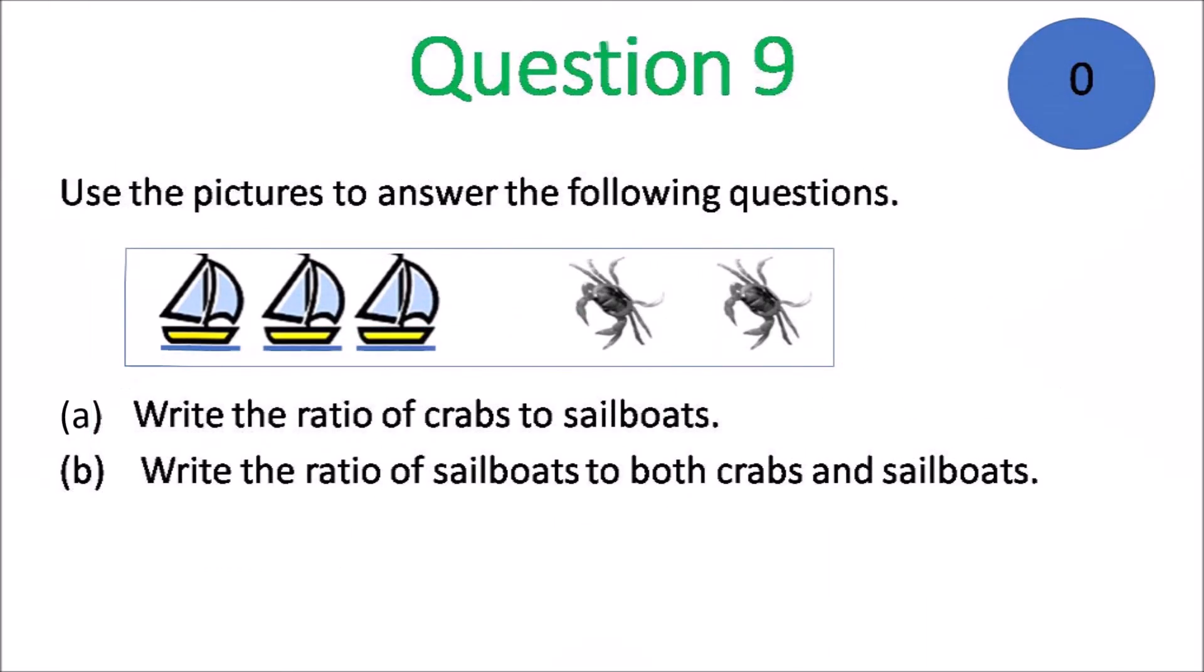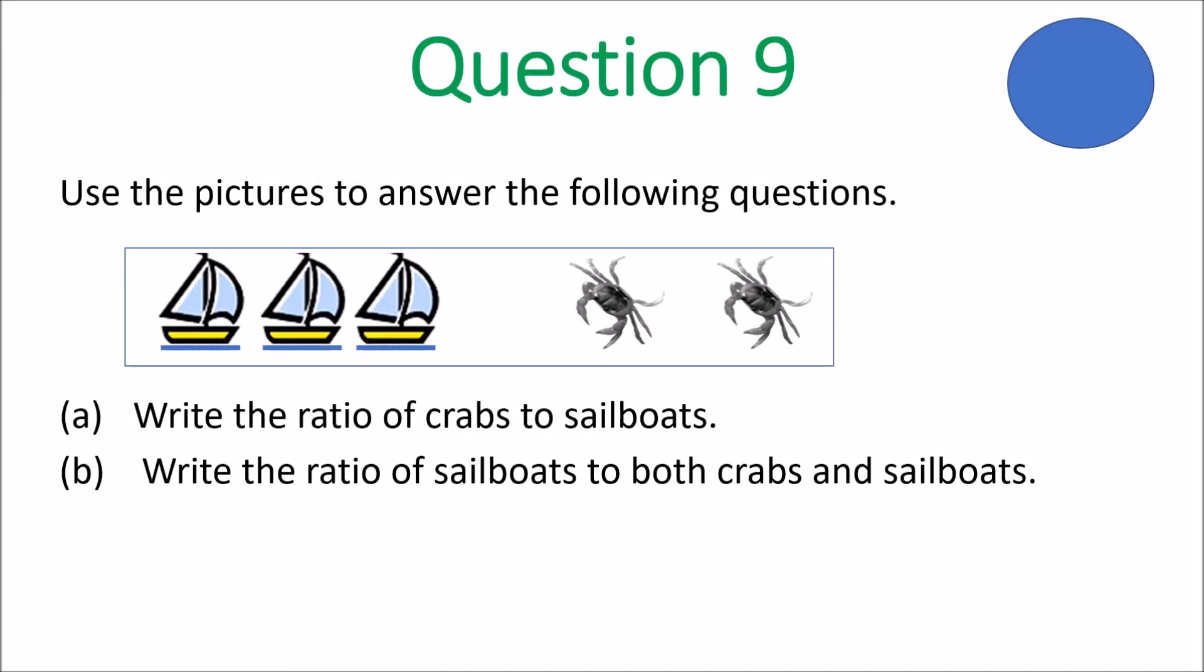You should be wrapping up question 8. And we move on to question 9. Use the pictures to answer the following questions. A. Write the ratio of crabs to sailboats. And B. Write the ratio of sailboats to both crabs and sailboats. Ratio question. Let's see how you handle this, Grade 6. One more question and that would be it for test 2.